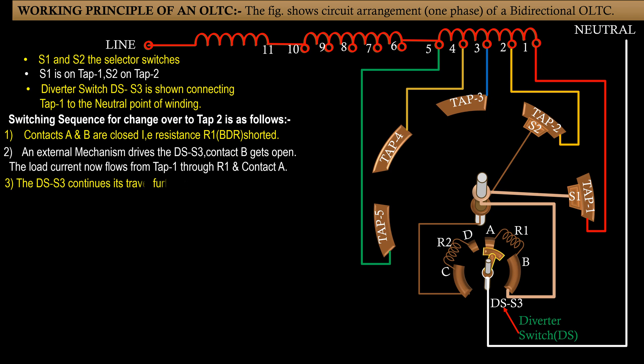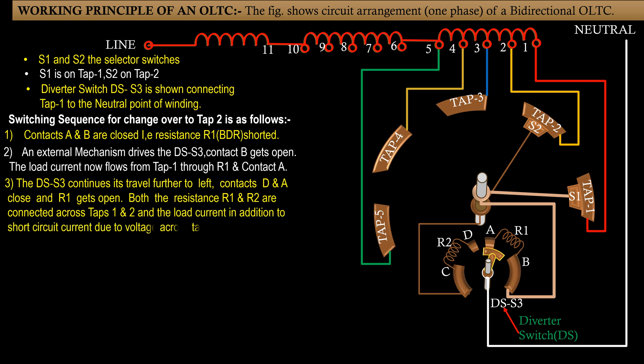Step 3: The DSH3 continues its travel further to left. Contact D and A close and R1 gets open.